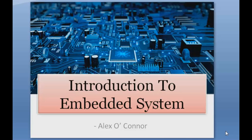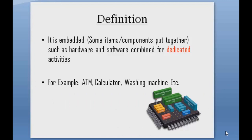So by definition, what is an embedded system? As the name suggests, it is embedded — meaning a few components are put together, in this case hardware and software, for some dedicated activity. I have highlighted the word 'dedicated' because it is for one specific activity. For example, the ATM: we insert our card, type in our pin, and cash out — but we cannot ask for a soda at an ATM. Similarly, a calculator and a washing machine are dedicated devices. Keep the word 'dedicated' in mind whenever this definition is asked.